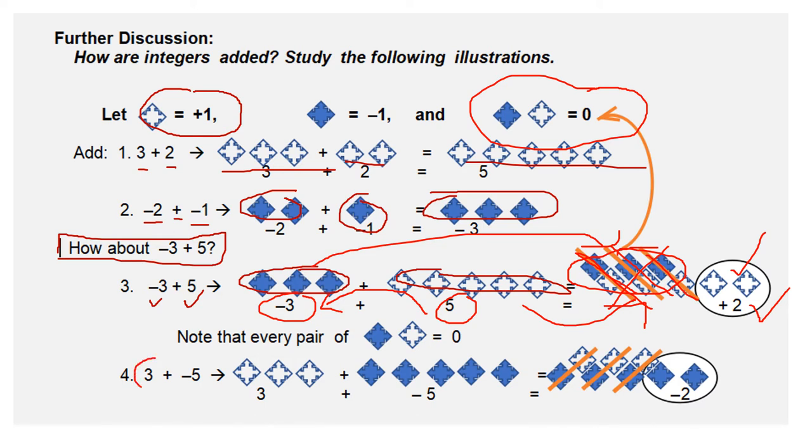Now, if I have an example such as this, positive three plus negative five, we represent the positive three with three white tiles, and the negative five with five colored tiles. Then, when we combine them, we draw the five tiles and the three tiles.